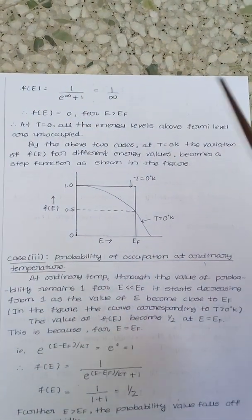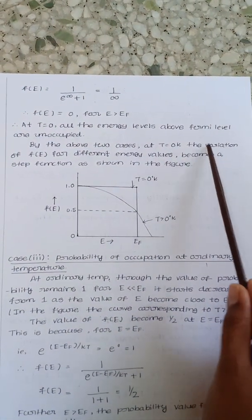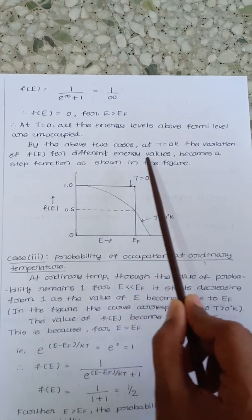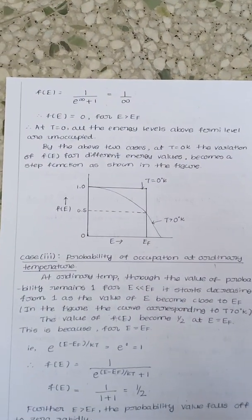By the above two cases, the variation of F(E) for different energy values becomes a step function, which is shown in this figure.